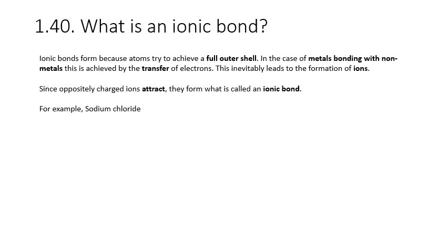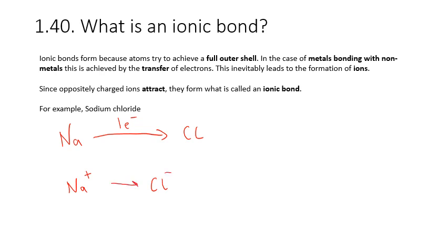For example, in sodium chloride, you've got your sodium atom and your chlorine atom. The sodium atom has one electron in the outer shell, and it will transfer that one electron to the chlorine. The loss of an electron causes sodium to form a Na1+ ion, and the gain of an electron causes chlorine to form a Cl1- ion, a chloride ion. These are oppositely attracted and therefore form an ionic bond, making NaCl.